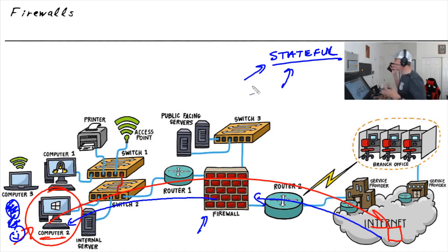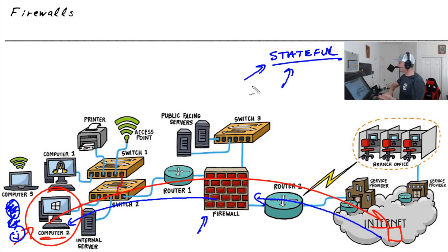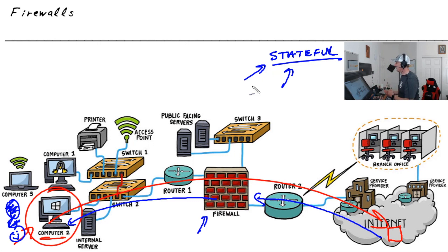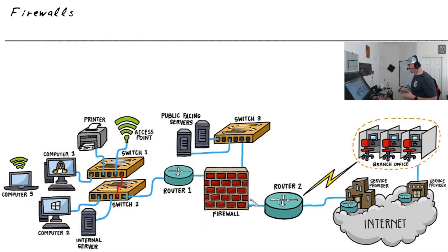When someone refers to a stateful firewall, they're referring to a firewall that can remember the initial requests that went through it — like Bob going out to the internet — and the firewall dynamically allowing that return traffic to come back because it remembers that initial request and the reply matches perfectly.